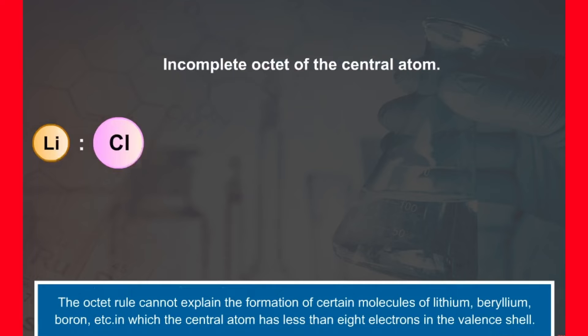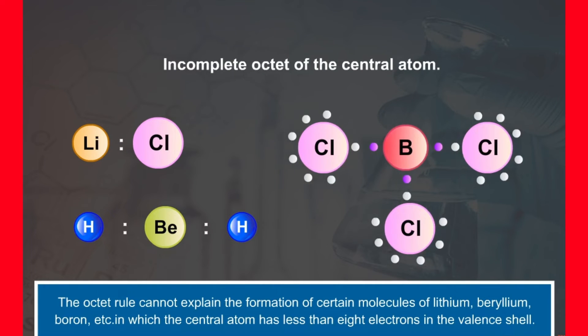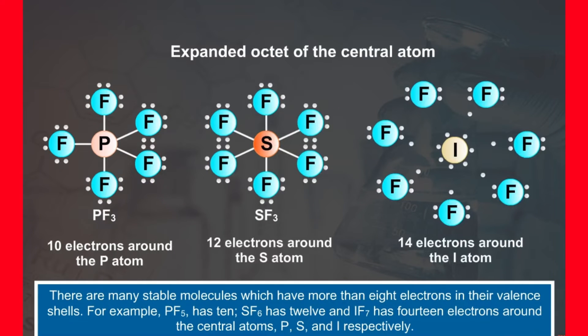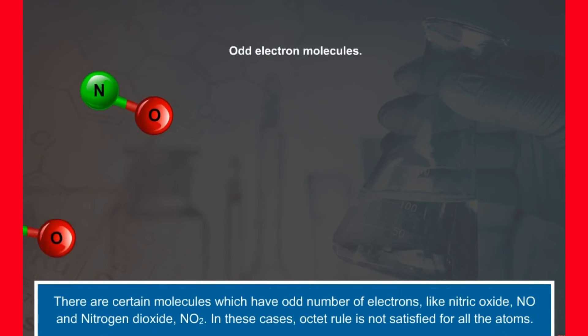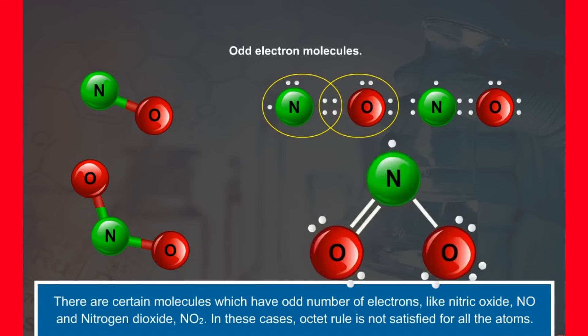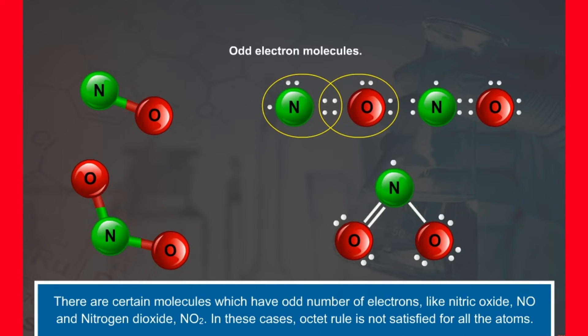The octet rule cannot explain the formation of certain molecules of lithium, beryllium, boron, etc. in which the central atom has less than 8 electrons in the valence shell. There are many stable molecules which have more than 8 electrons in their valence shells. For example, PF5 has 10, SF6 has 12, and IF7 has 14 electrons around the central atoms P, S and I respectively. There are certain molecules which have odd number of electrons like nitric oxide and nitrogen dioxide. In these cases, octet rule is not satisfied for all the atoms.